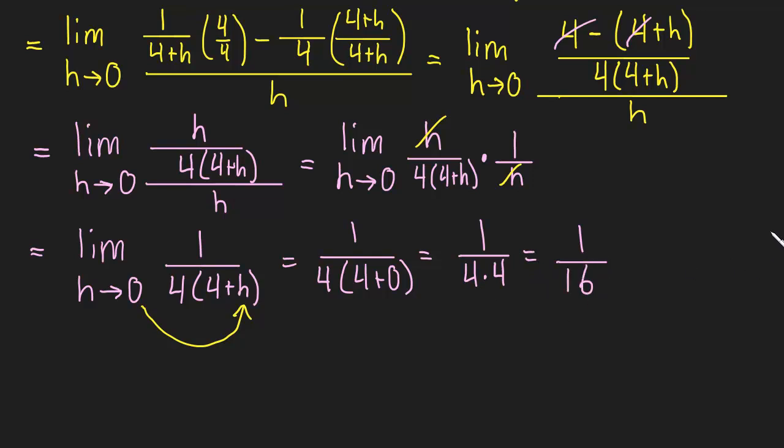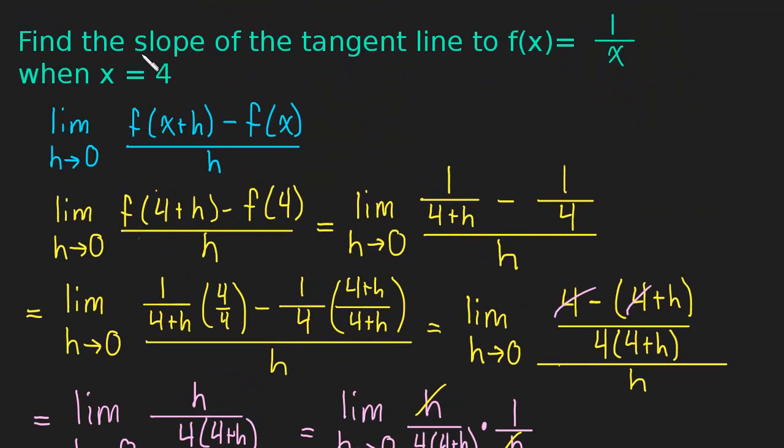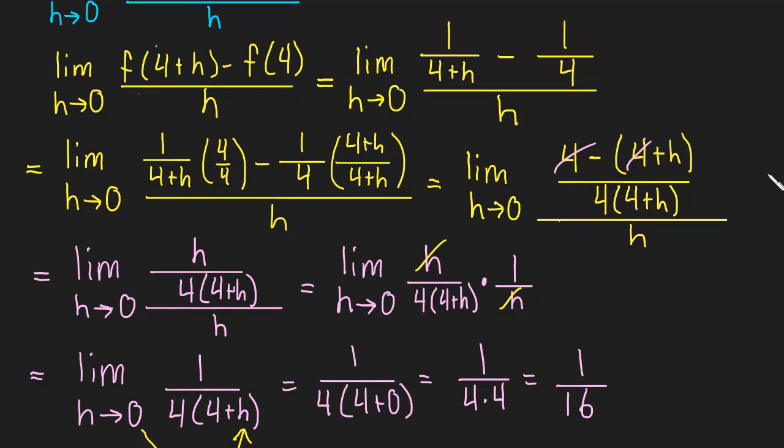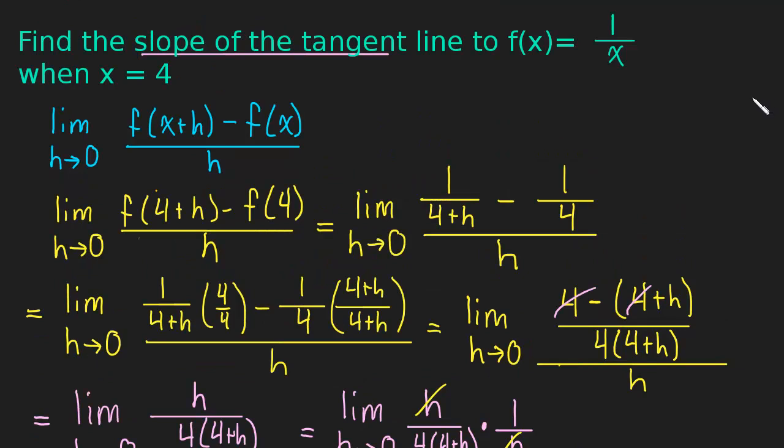So 1/16 is our final answer, and 1/16 is the slope of the tangent line to this function when x is 4. Now if solving this limit confused you, I do an entire video on solving a limit very similar to this one where I explain more in depth how to actually do this limit. But this video is more about using that process to find this slope.